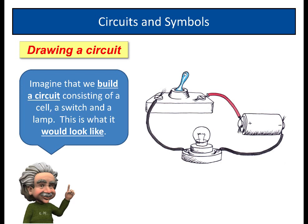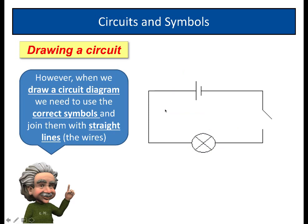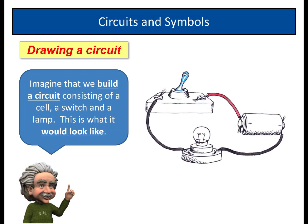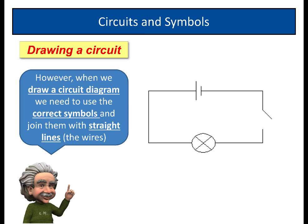Now, suppose you want to build a circuit. And the circuit's going to have in it a cell. Remember that it's a cell, not a battery. It's a cell, and a switch, and a lamp. Now, if you were to build it and draw it, this is what it might look like. However, that is not how we draw a circuit diagram. In the circuit diagram, you've got to have the right symbols. So, when we draw a circuit diagram, you need the correct symbols. Here we've got the cell, there we've got the switch, and there we've got the lamp or the bulb. And notice we join them with straight lines. The straight lines represent the wires. You must always have straight lines.